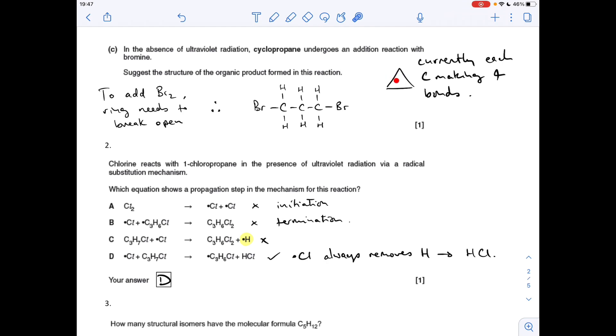To get the two bromine atoms on, we've basically got to break the ring open. Imagine the ring opens and it sort of unfolds. That would allow a bromine to go on at each end, so we need the bromine on carbon one and carbon three.